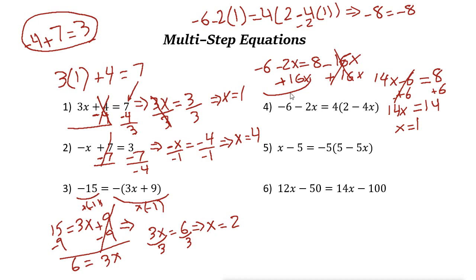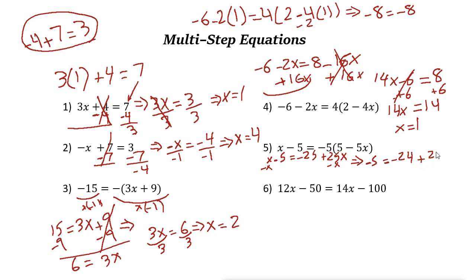Let's take a look at the next example — it's similar to the previous one. Here we have (x minus 5)(x minus 1) equals, and multiplying out the right side: negative 5 times 5 is negative 25, and negative 5 times negative 5x is positive 25x. So the right side is negative 25 plus 25x. Now 25x is bigger than x, so let's subtract x from both sides. Then x minus x is 0, giving negative 5 equals negative 25 plus 24x.